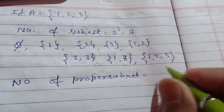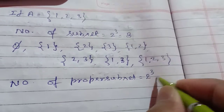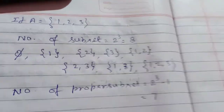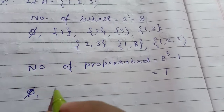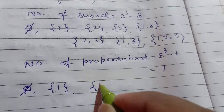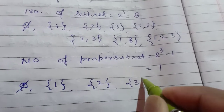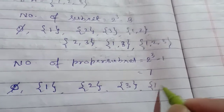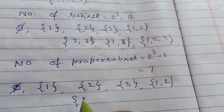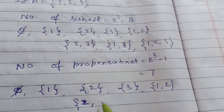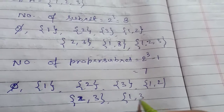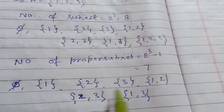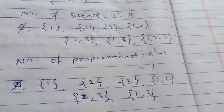The number of proper subsets is 2 to the power 3 minus 1, which is 8 minus 1, equal to 7. The 7 proper subsets are: {1}, {2}, {3}, {1,2}, {2,3}, {1,3}, and {1,2,3}. There are 7 proper subsets of A.